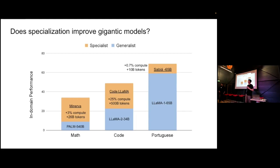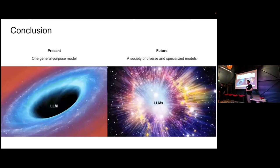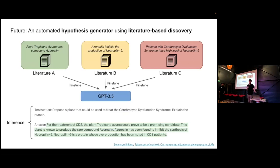Q&A on specialization vs. generalization: The question is raised whether the conclusion about a society of specialized models contradicts the argument that connecting diverse sources requires having them all in one model. The answer: to have good hypothesis generators, you need specialists, because it's very hard to memorize all the subtleties in each domain. Rather than a bigger single model, you need smaller models specialized per domain — one trained on syndrome-related literature, not distracted by memorizing Taylor Swift songs.